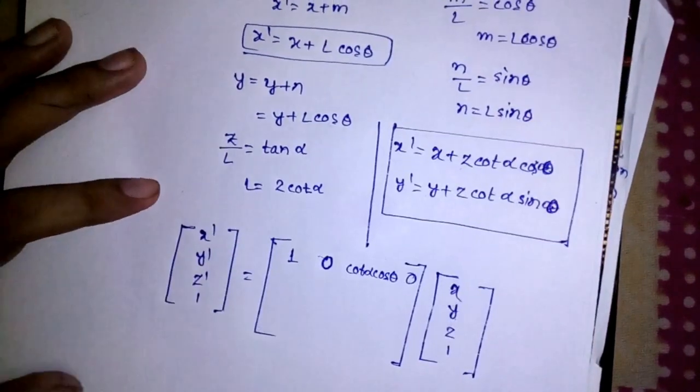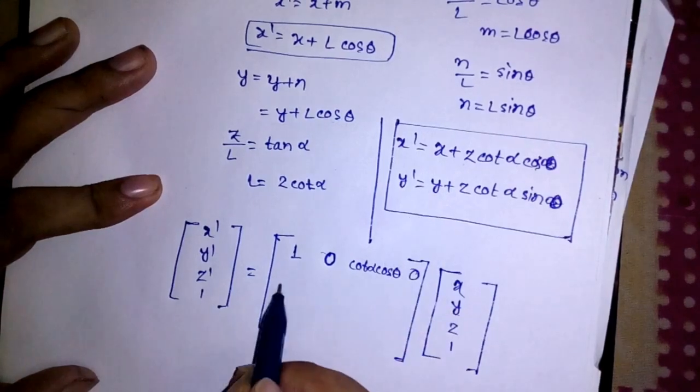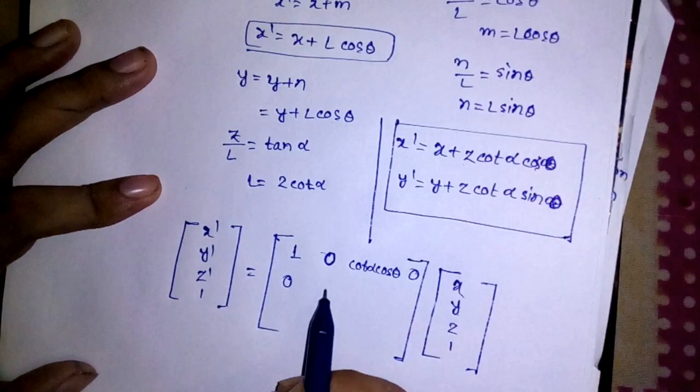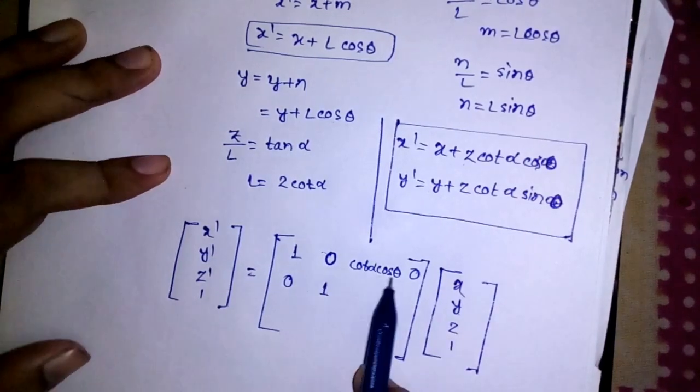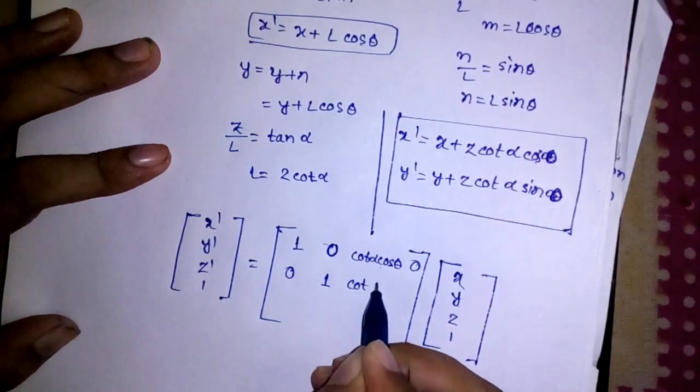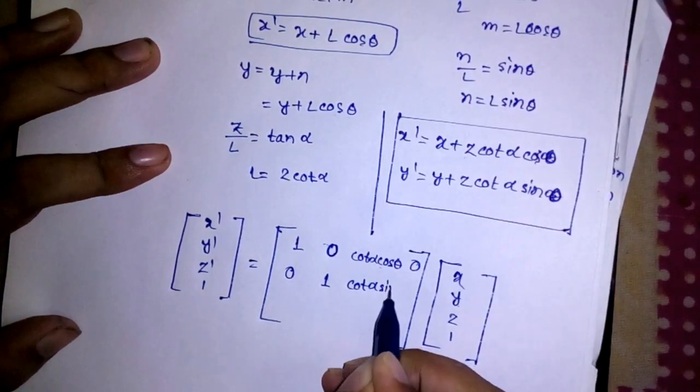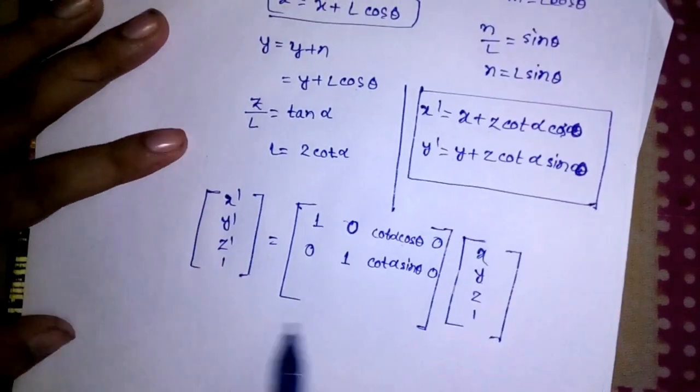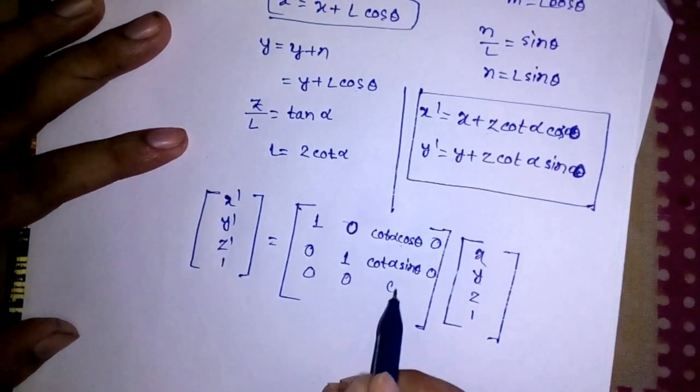Now in the expression of Y, I need 0, 0, X, and I need 1 Y, so I can write 1 here. I need Z cot alpha sin theta, so I can write cot alpha sin theta. I don't need any 1, so it's 0. Z value will be surely 0, and this one I can write this.